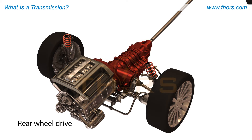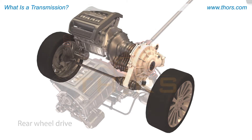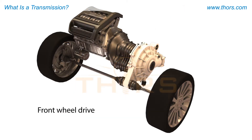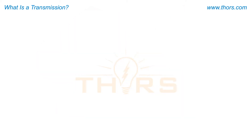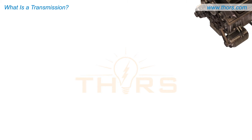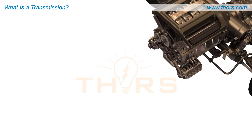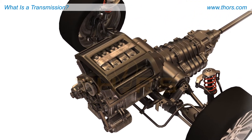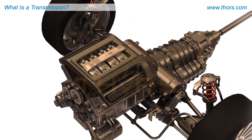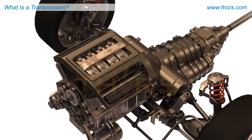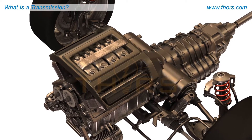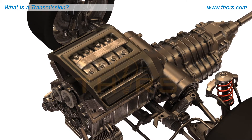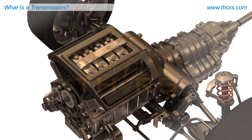For front-wheel drive vehicles, the transmission is usually located beside the engine. The main power source that drives a transmission is commonly referred to as the prime mover. The prime mover in a motor vehicle is, of course, the engine.